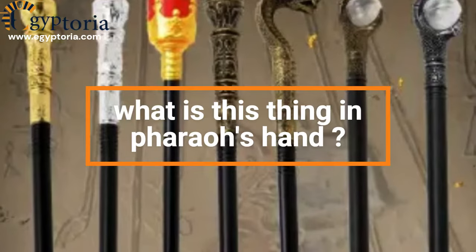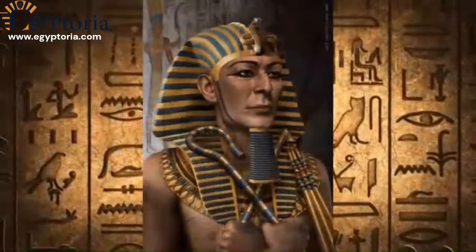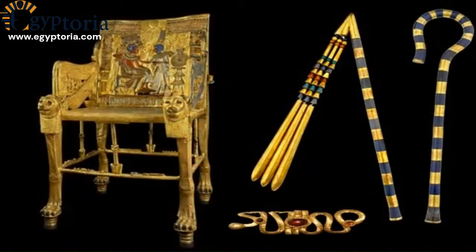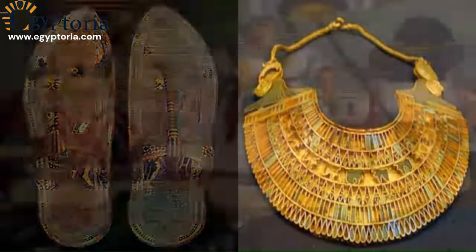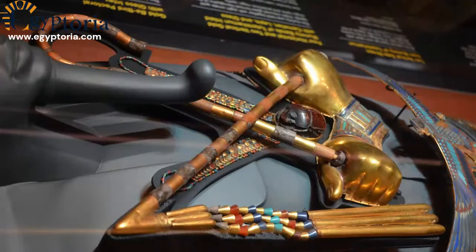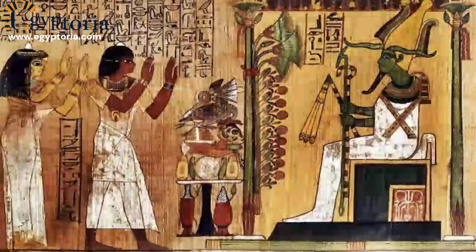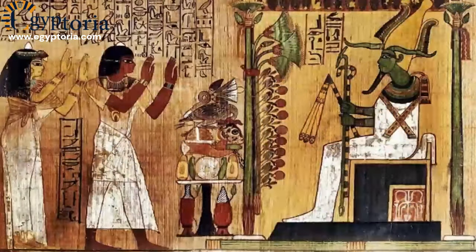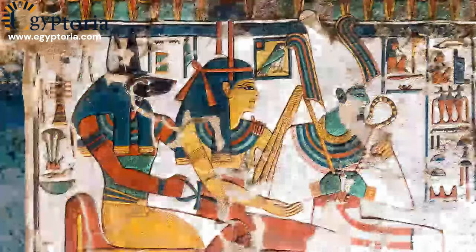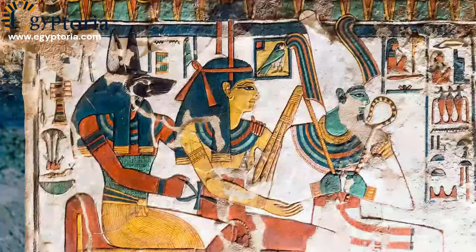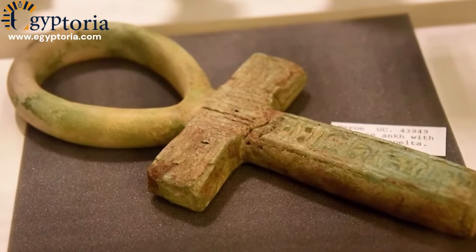What is this thing in pharaoh's hand? There were several objects commonly depicted in the hands of pharaohs in ancient Egyptian art. The crook and flail were symbols of the pharaoh's authority and power. The crook, shaped like a shepherd's crook, represented the pharaoh as a shepherd guiding and protecting his people. The flail, a whip-like instrument, symbolized the pharaoh's ability to punish and maintain order.